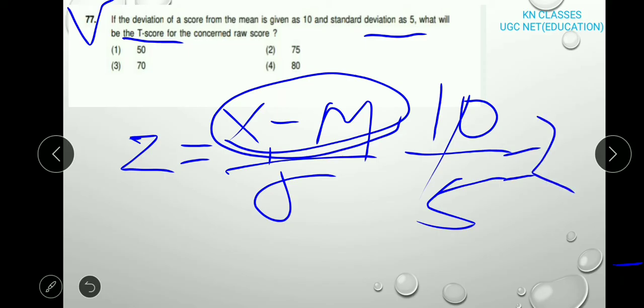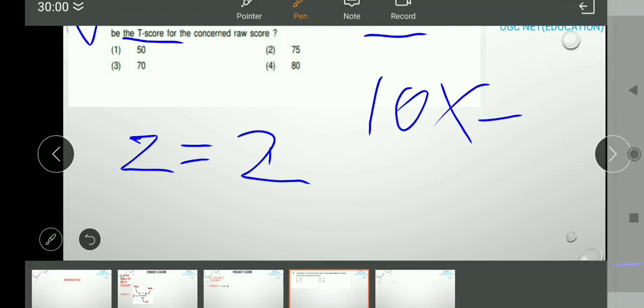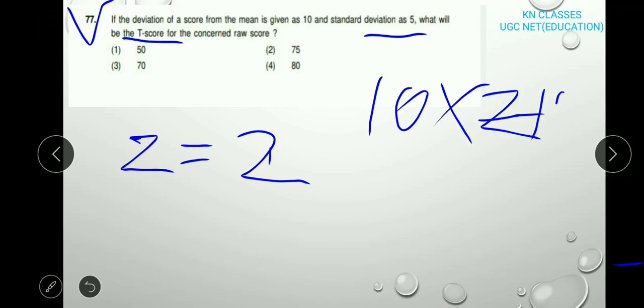So 2 is Z score. Then how to calculate T score? See, we have found the Z score as 2. So let's apply the T score formula. T score is equal to 10 into Z plus 50.